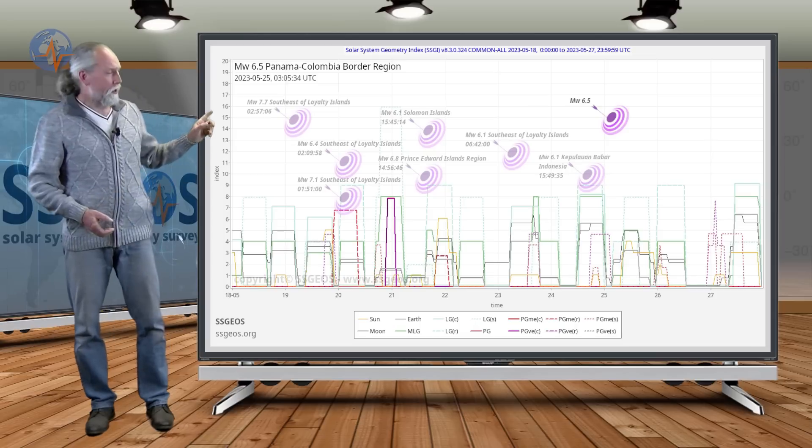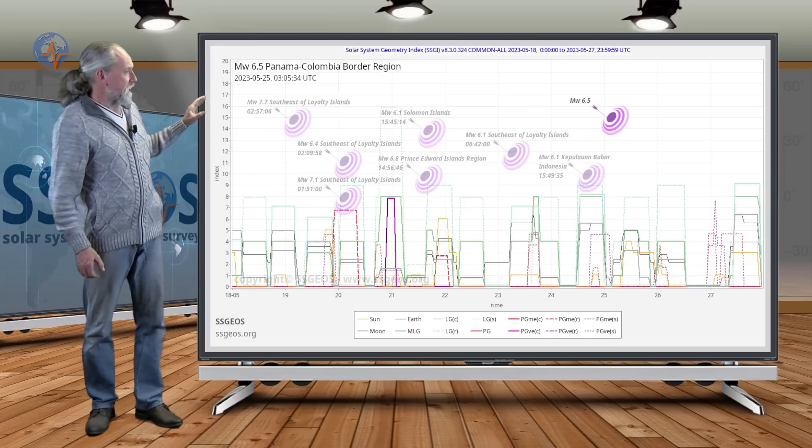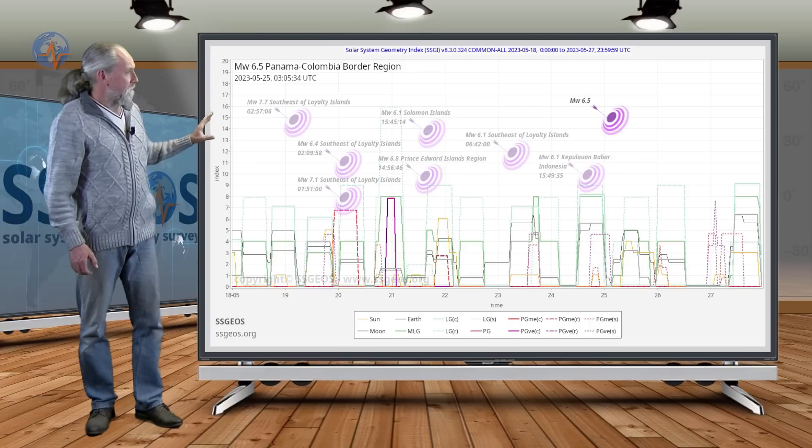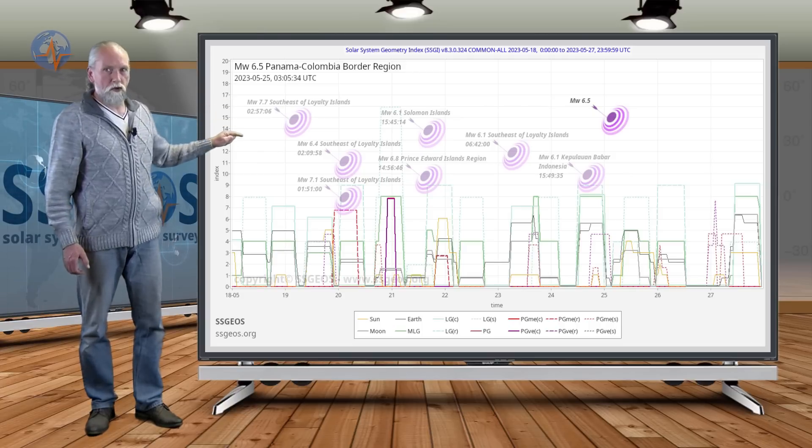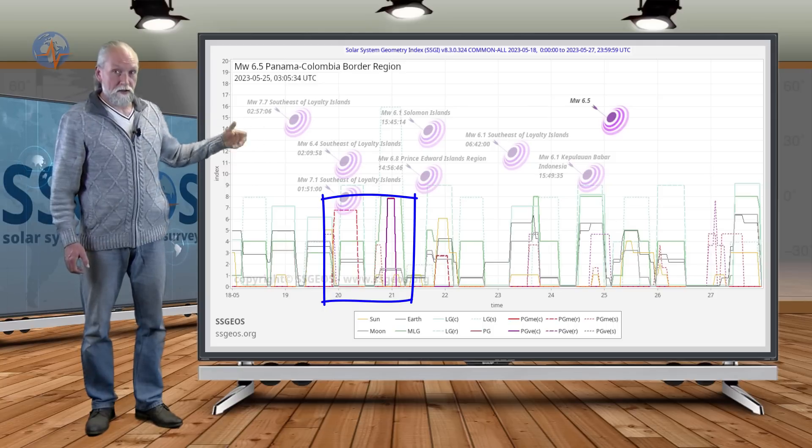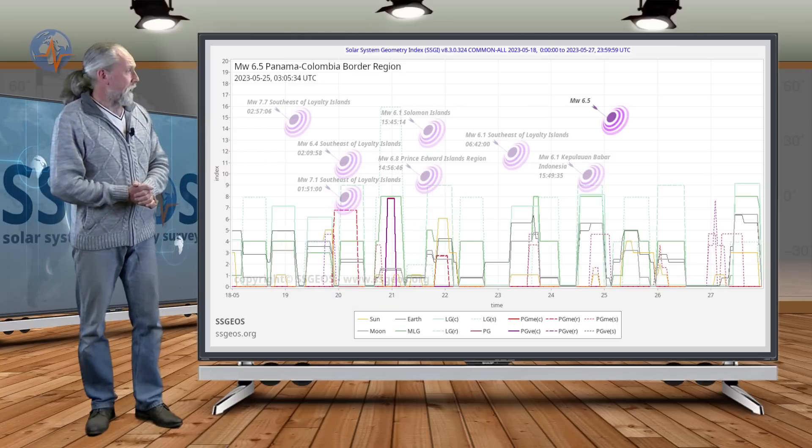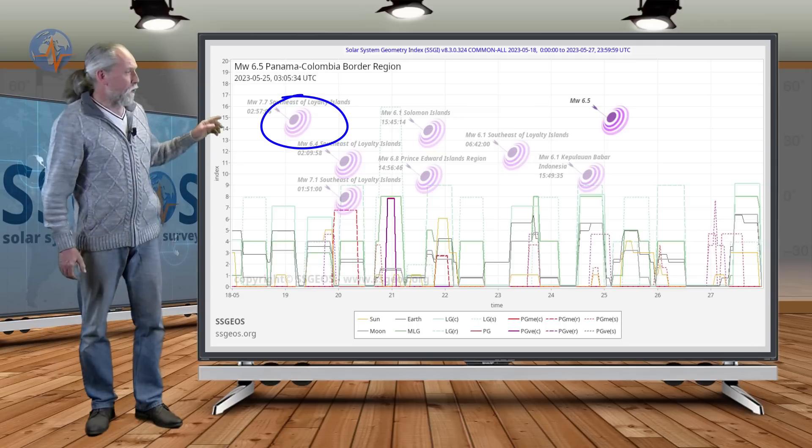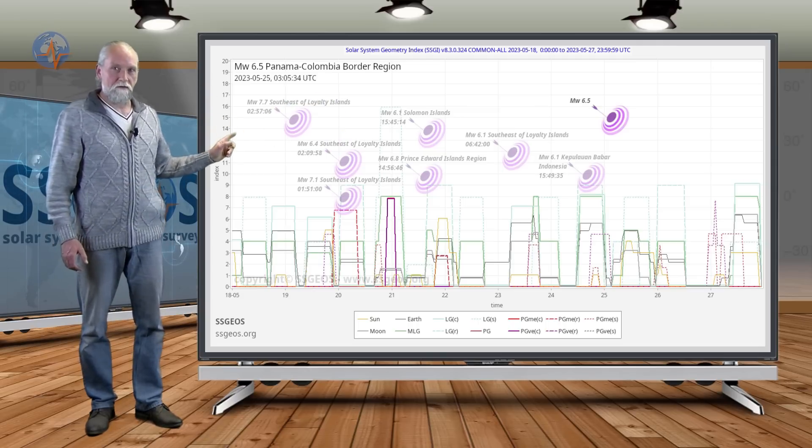If you look at the SAGI graph we see pretty much a clustering of strong earthquakes following the convergence of critical planetary geometry on the 20th and 21st, as I discussed in the previous update, and we also see this magnitude 7.7 and that was two days after the lunar peak on the 17th.